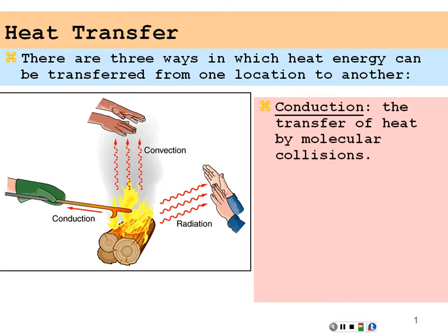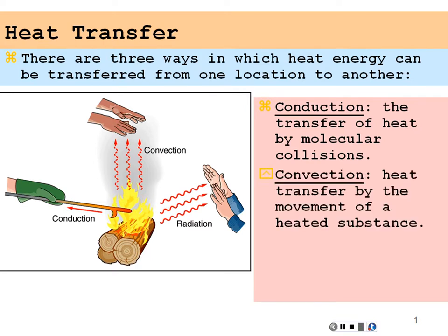We can have conduction, which would be the immediate transfer of heat by molecular collision, so everywhere along that substance, the molecules are trading and transferring energy across that substance. Convection is the actual movement of the heated substance itself, so as the fire is heating the air and the smoke, and the smoke actually travels and heats the hands above the fire.